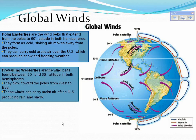The prevailing westerlies are the wind belts found between 30 degrees and 60 degrees latitude in both hemispheres. They blow towards the poles from west to east. These winds can carry moist air over the United States, producing rain and snow.